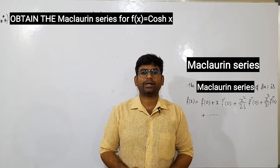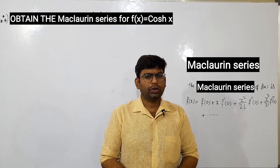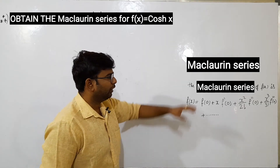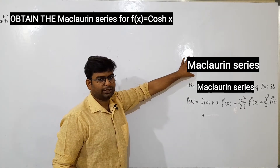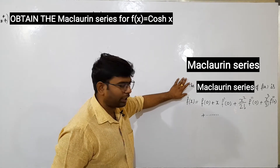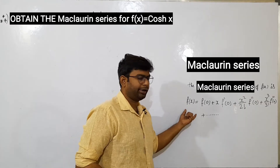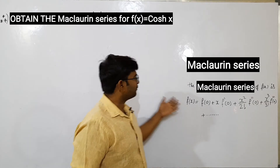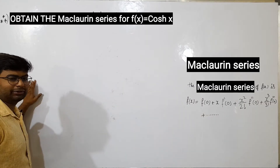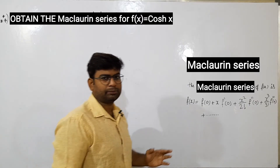Hello and welcome back to Varis Academy. This is Ravi. Here is the most important method: the Maclaurin series. This is a formula trick — easy to learn, and some problems are going to be asked from this. This method is basic to some other methods.